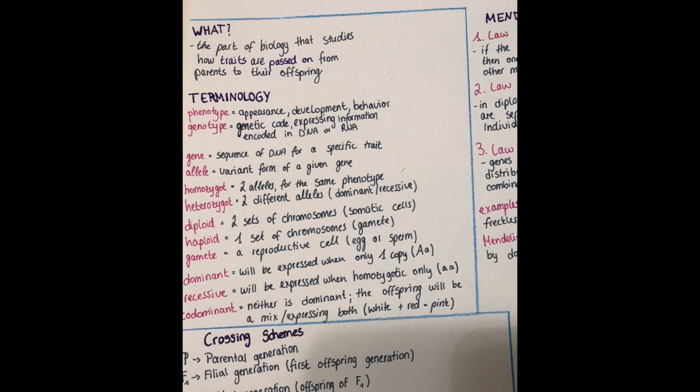Okay so the next term is a gene. What is a gene? A gene is a sequence of DNA which codes a specific trait. And the allele is a variation of a form of a given gene. So for example there's a gene for the eye color, and the allele would be for blue eyes or green eyes or brown eyes.